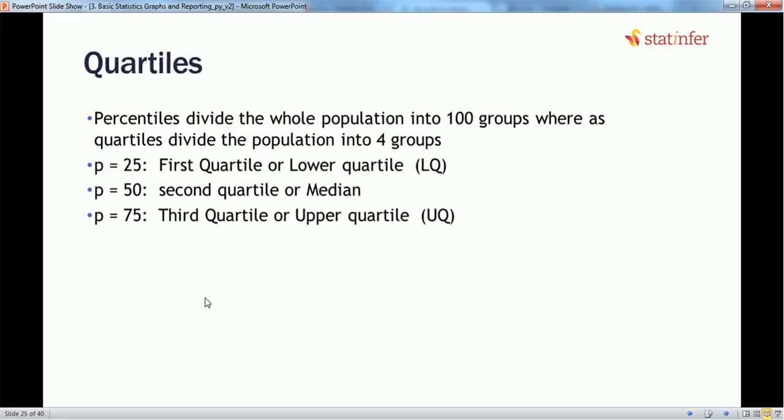Next concept: quartiles. Percentiles can be divided into groups. Percentile divides into 100 groups, but we can find two or four basic groups and call them quartiles. So if pth percentile is 25, we call it the first quartile. If the p value is 50, we call it second quartile or the median value, and anything below 75 percentile would be in the third quartile or upper quartile.